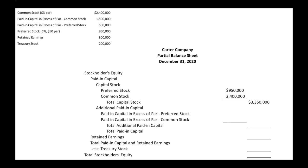Now we move on to additional paid-in capital. Paid-in capital in excess of par for preferred stock is $500,000, and paid-in capital in excess of par for common stock is $1,500,000. So total additional paid-in capital is $2,000,000.